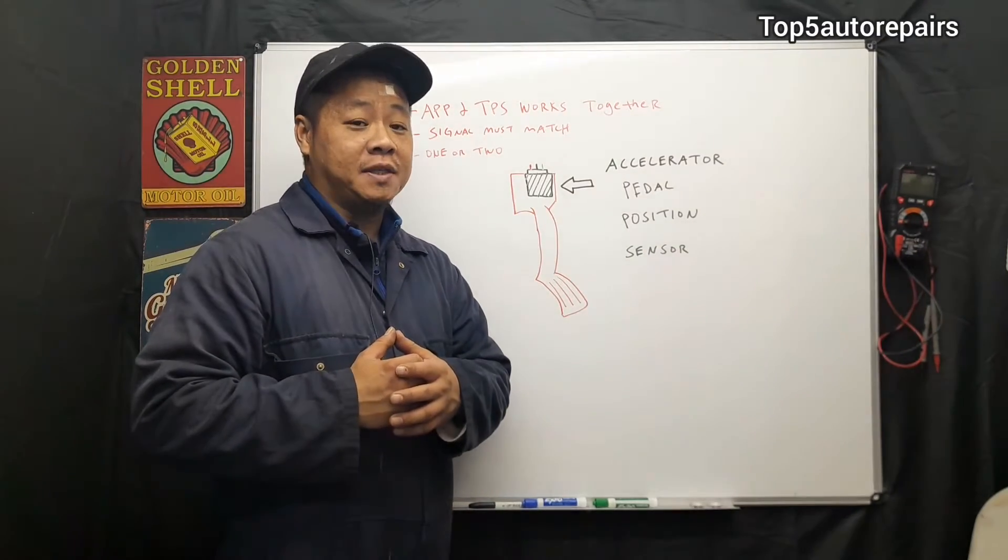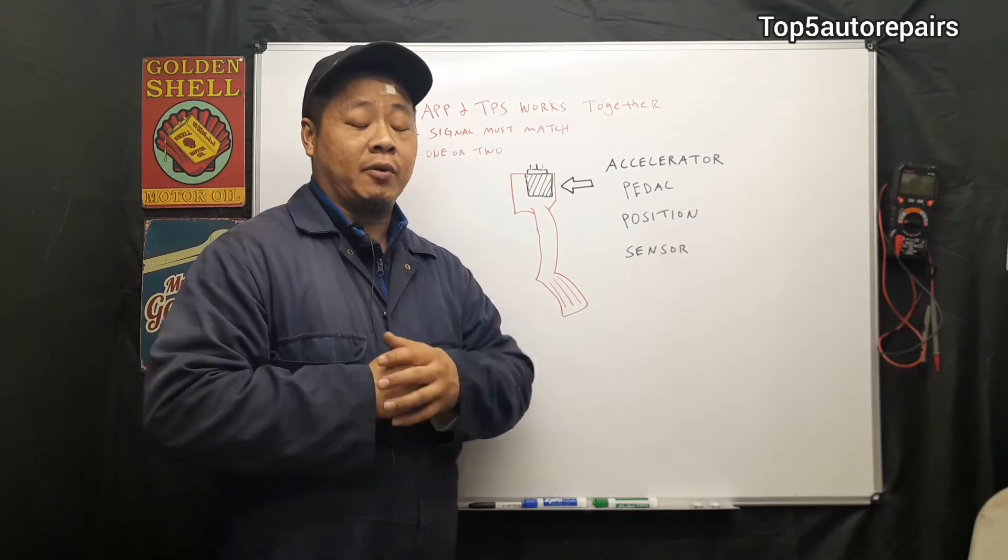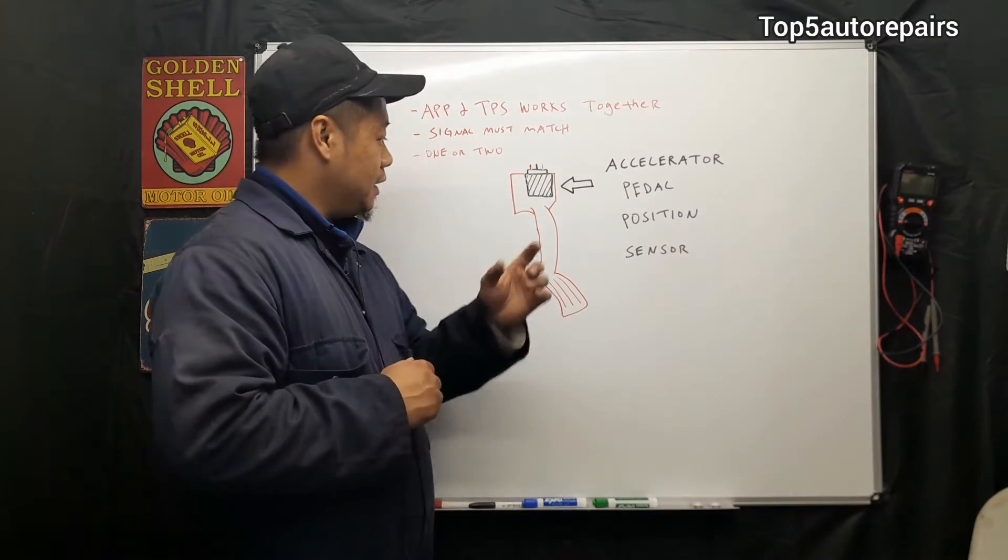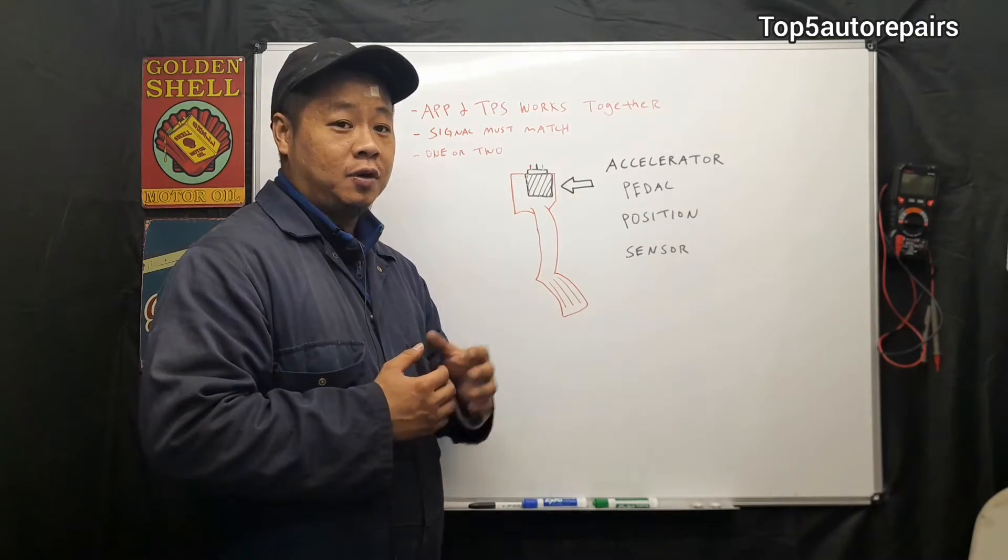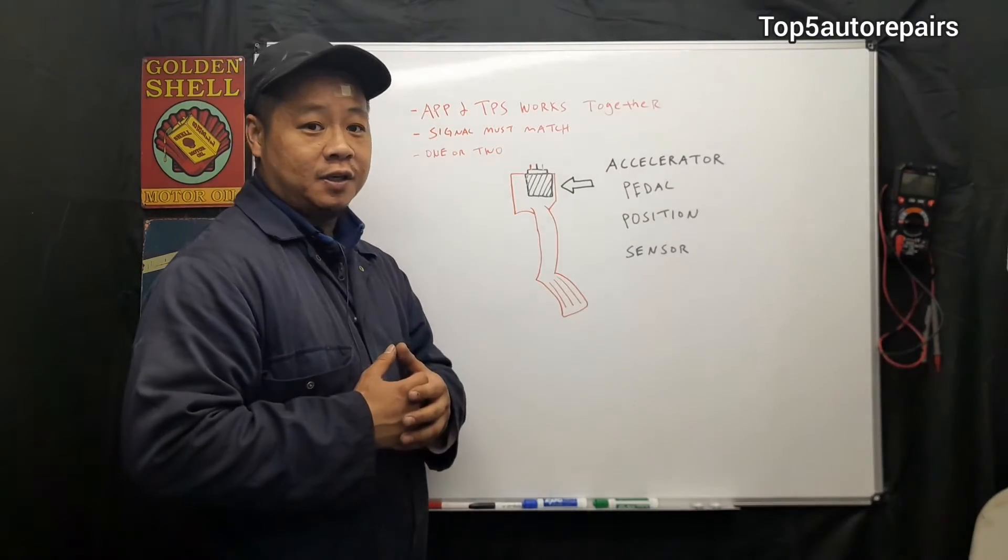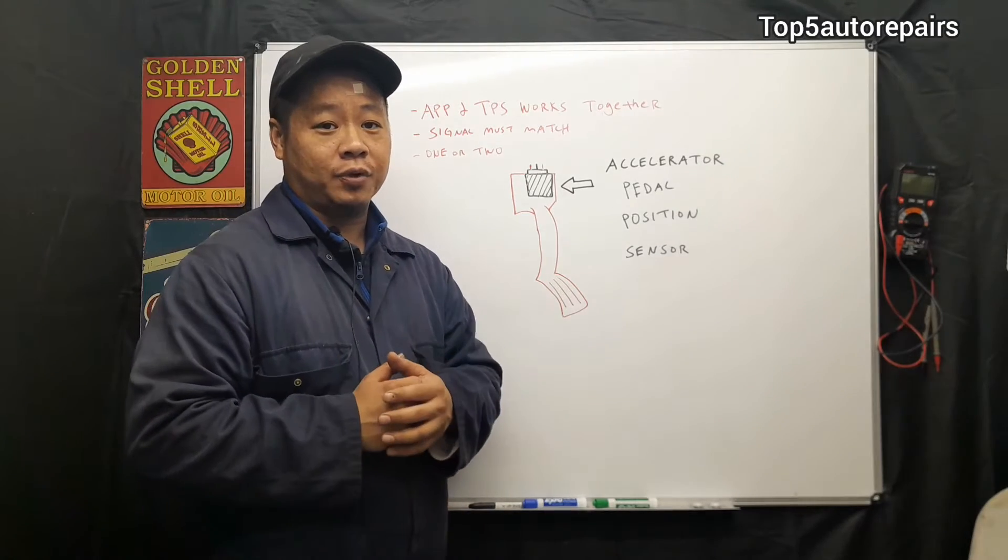The APP sensor or accelerator pedal position sensor is mounted on the gas pedal. Together, the APP sensor works with the TPS sensor and the signal is sent to the computer.